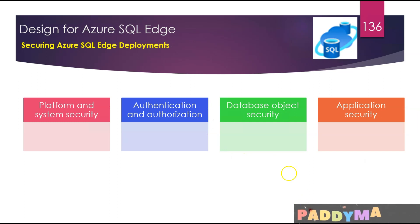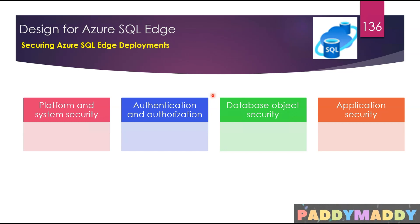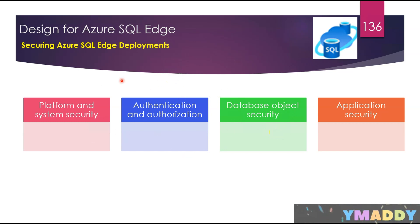Security is a primary concern when deploying IoT applications to the edge. Because Azure SQL Edge is based on SQL Server technology — one of the most secure database platforms available — it has security features from SQL Server Enterprise that you must utilize. The same security policies and best practices can be extended from cloud to edge deployments. There are four security pillars to consider.